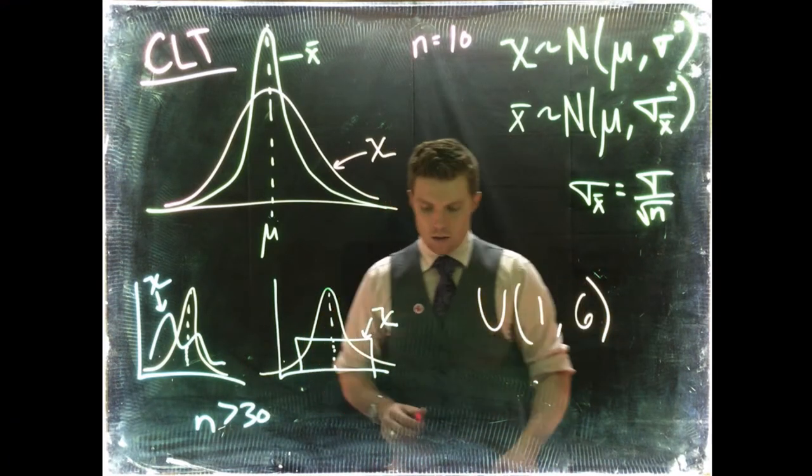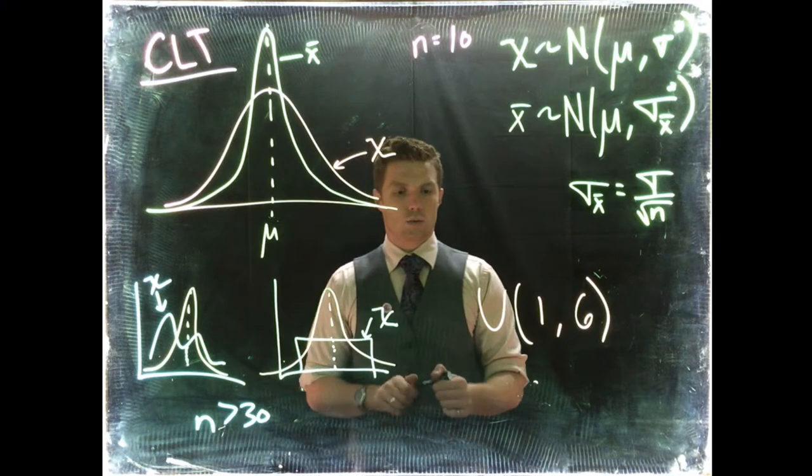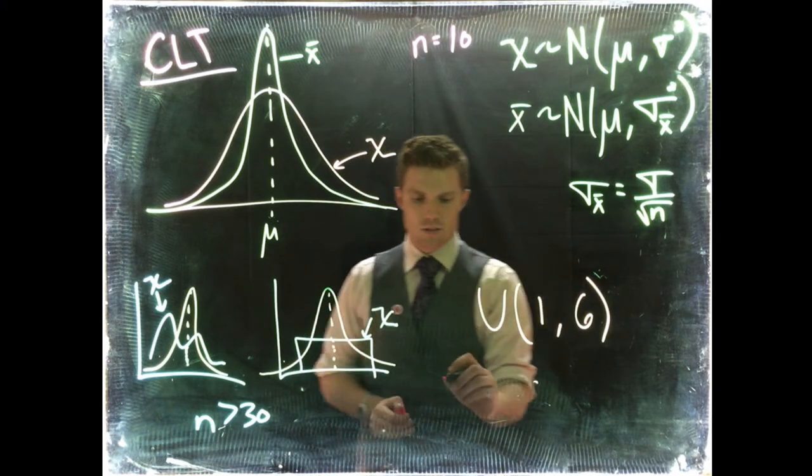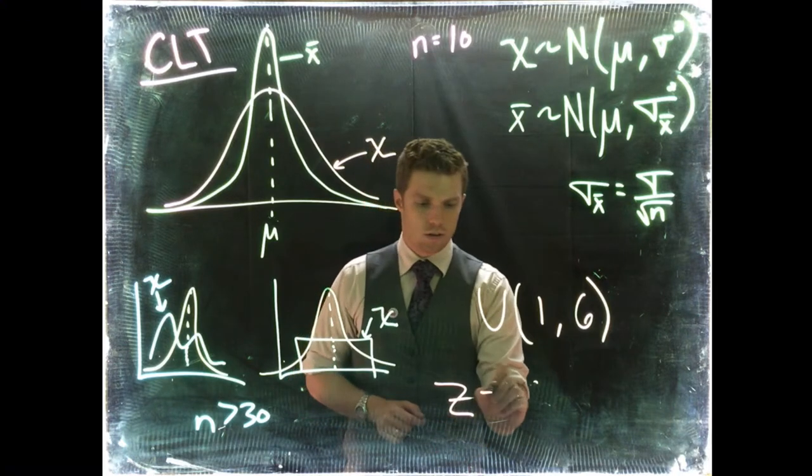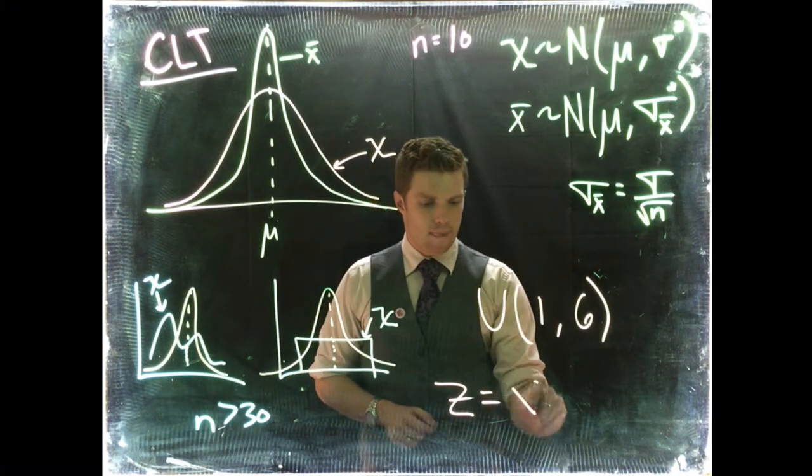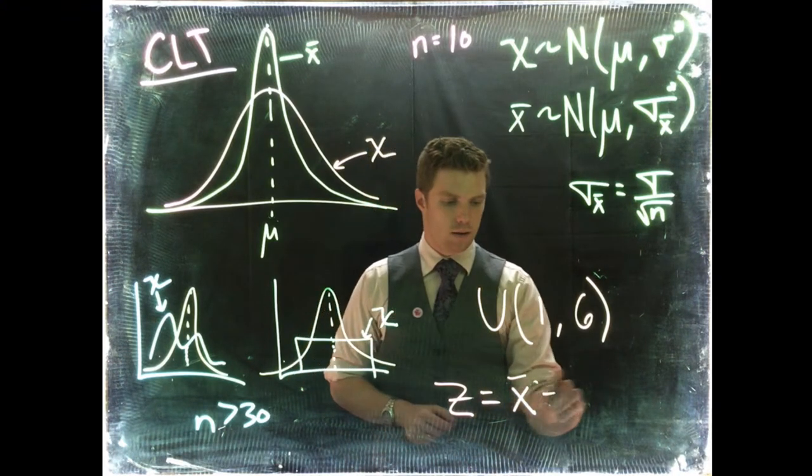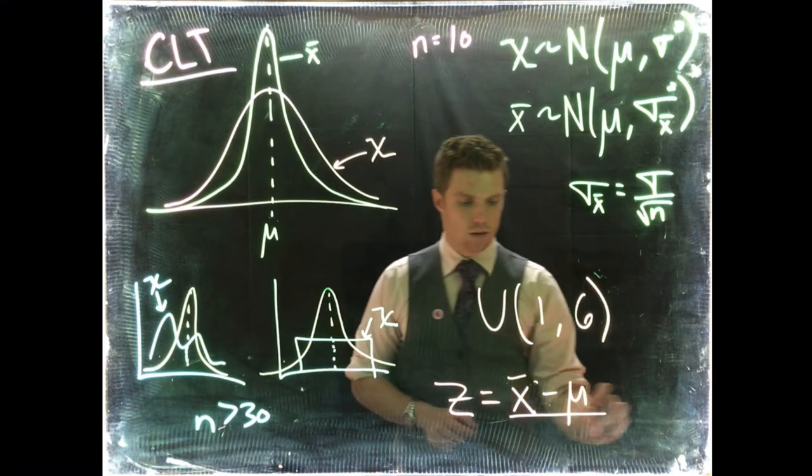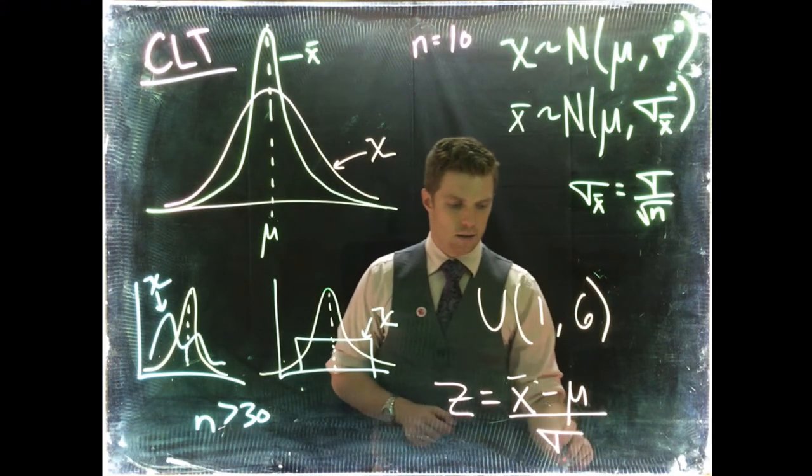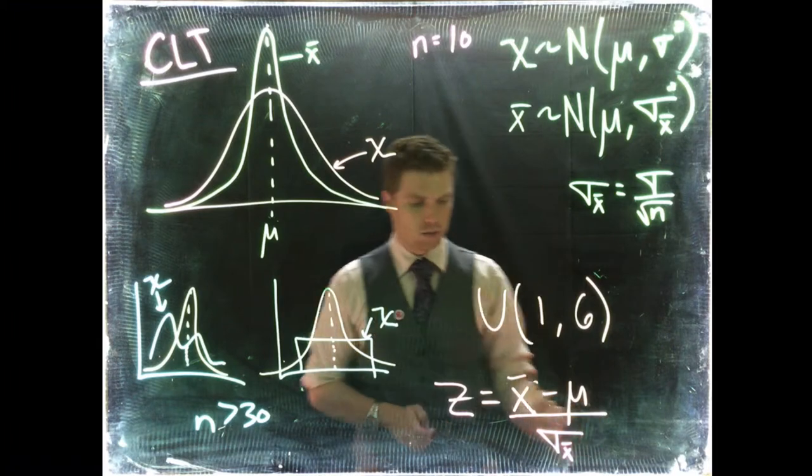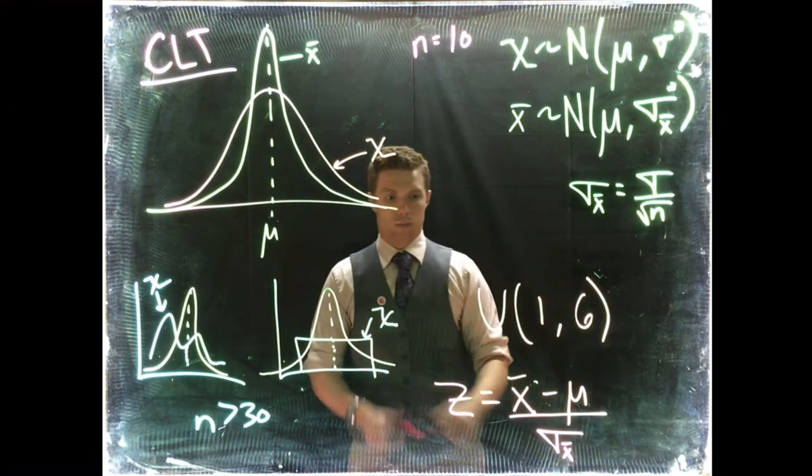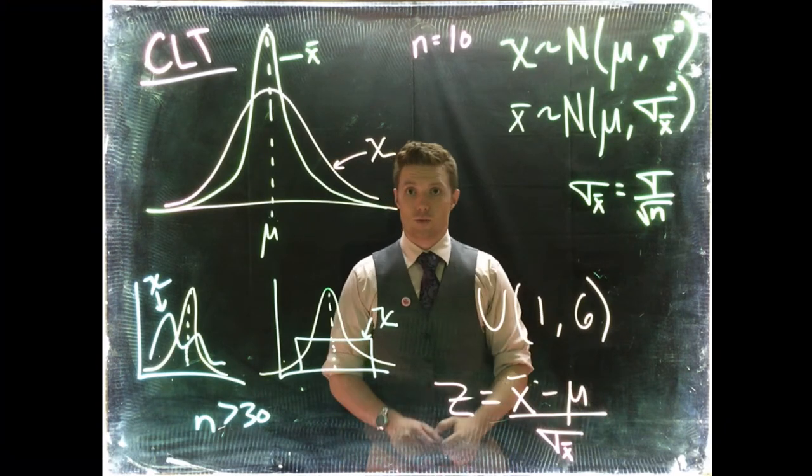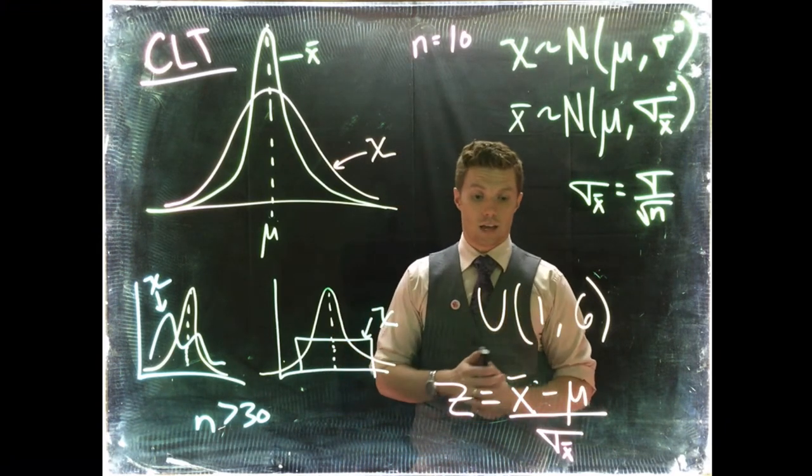And so what's cool is that the equation that we actually use is still the same. So we're still talking about Z scores equal, and we're doing X bar minus mu divided by sigma with respect to the sample mean. So remember, we can always go back to this calculation.